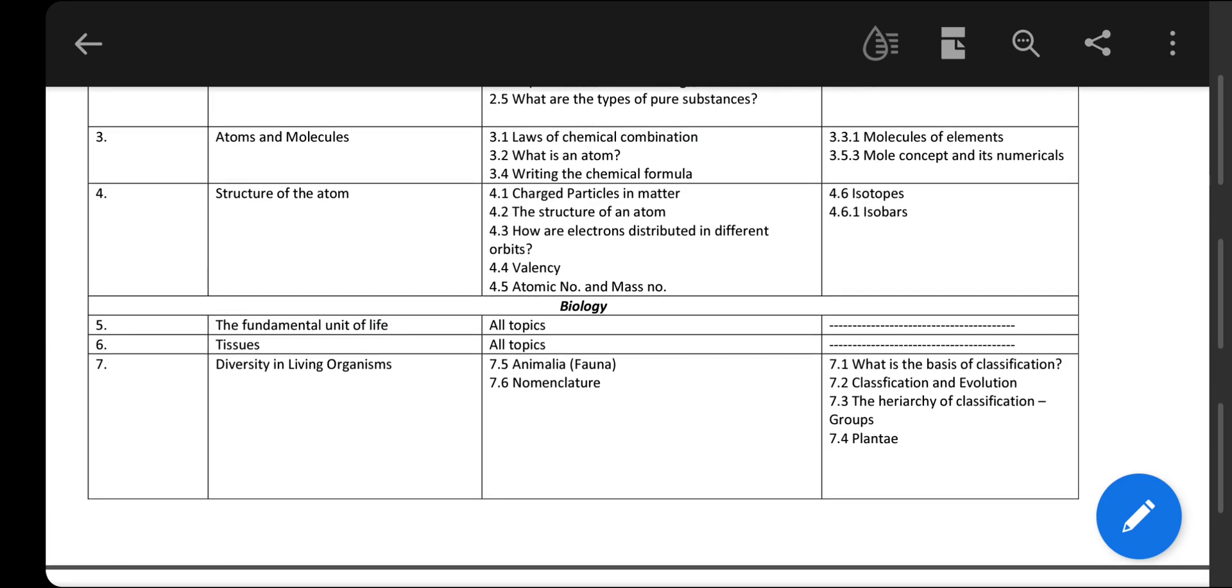Coming to the third chapter of chemistry, Atoms and Molecules, there are three topics that you have to learn that will also be helpful in Class 11: law of chemical combination, what is an atom, and writing the chemical formula. The two topics excluded are molecules of elements and mole concept and its related numericals.